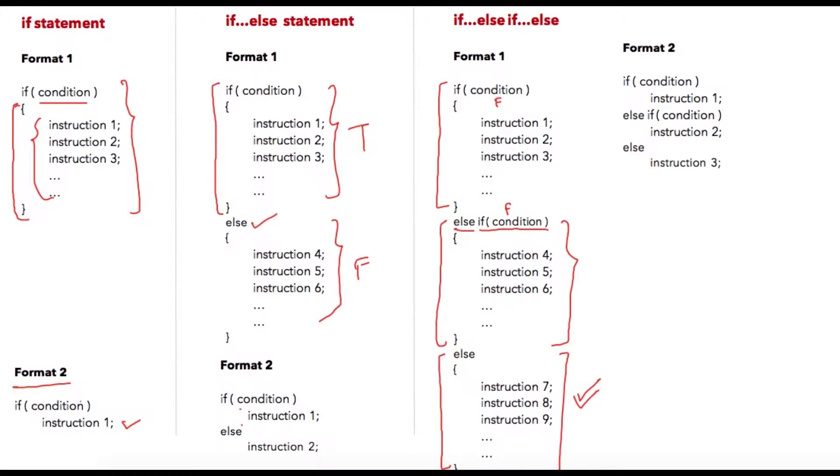So how will this program execute? Let's check. If this condition is true, this block will get executed. If it is false, it will check the next statement. If this condition is true, this block will get executed. If this condition is false, it will execute this block for else.